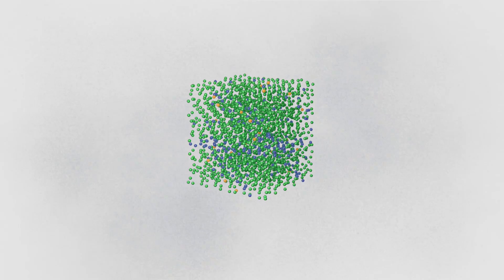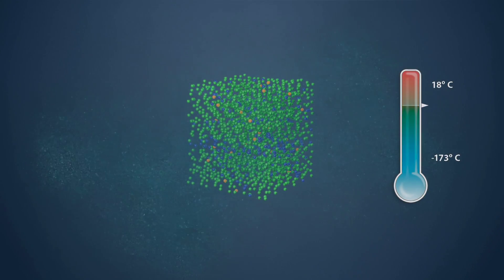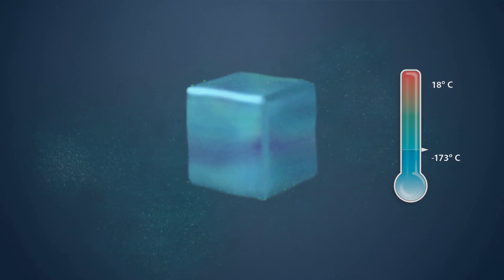The air is then directed to a cold box, where it is cooled to about minus 173 degrees Celsius. This is where the air starts to become a liquid.